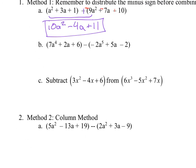Here again I have a minus, so I'm going to change this into addition by flipping all the signs inside. Now I have: 2a to the fifth, then 7a to the fourth, then 2a minus 5a gives me minus 3a. The constant: plus 6 plus 2 is plus 8. That's my final answer.